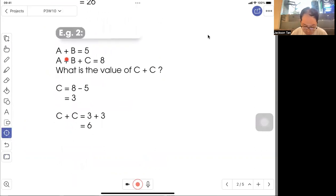Example two. You see A plus B is five, A plus B plus C is eight. What's the value of C plus C? So you look carefully, this part A plus B is five. So to get C, you just take eight minus five, three. So since you know C is three, so three plus three, and the answer is six.